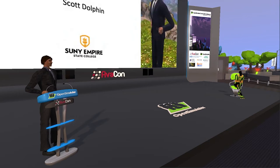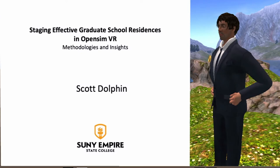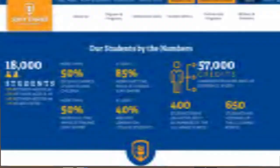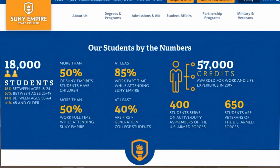Hello everyone. My name is Scott Dolphin, I am from SUNY Empire State College in balmy New York State, and this is my presentation on staging effective graduate school residencies in Open Sim VR. Before I start, a quick bit of background: SUNY Empire State College is a decentralized university. We do have a main campus in Saratoga Springs, but we have unit offices all around the state and we are the only campus with a full range of academic programs from an associate's degree all the way through to a doctorate.